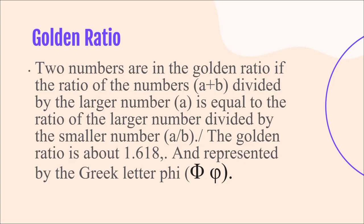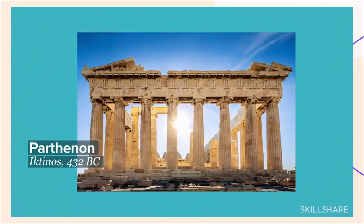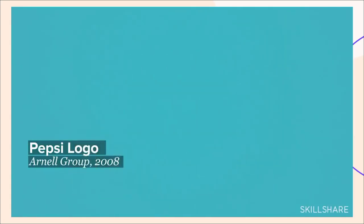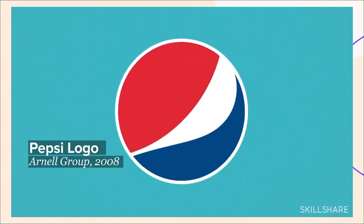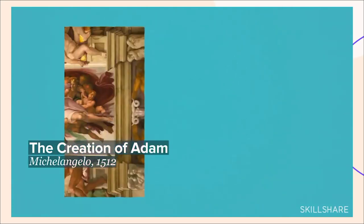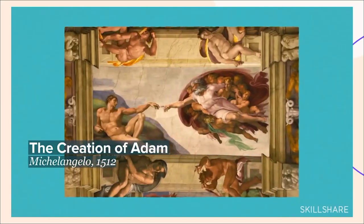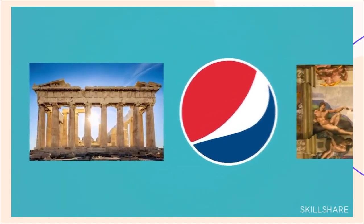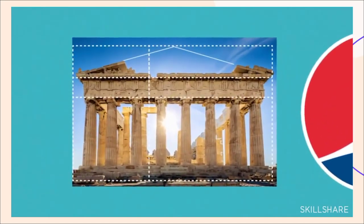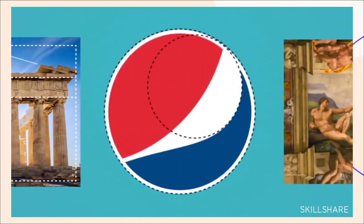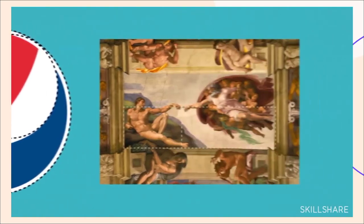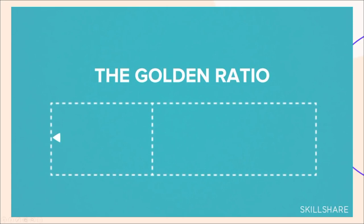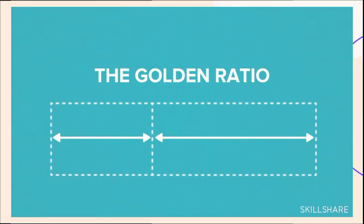The worlds of architecture, design, and art may seem like open, creative endeavors, but they may not be quite as spontaneous as they first appear. When we look at great works like these, there are similarities that we just can't ignore — all these instances adhere to the same compositional proportions. These proportions are known as the Golden Ratio.